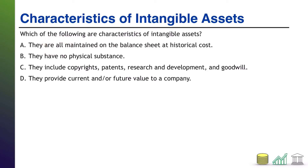Typically, when you see these absolute phrases, they tend to be wrong because there are exceptions, and this is no different. They are not necessarily all maintained on the balance sheet at historical cost. In fact, internally generated intangible assets — because of the stringent rules about what you're allowed to capitalize — may not ever even make it to your balance sheet, as in the case of McDonald's Golden Arches, which probably aren't on McDonald's balance sheet. Even those that do make it to the balance sheet may not always be at historical cost, because you may add value later by capitalizing legal defense costs, or the intangible could lose value through impairment. So A is not a characteristic of intangible assets.